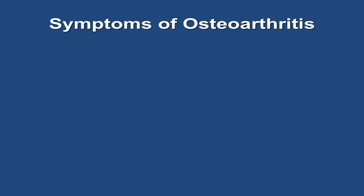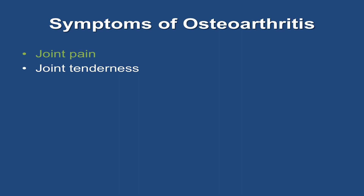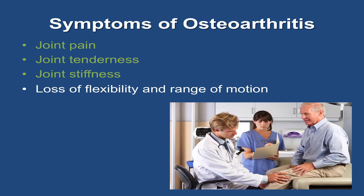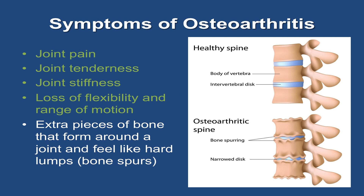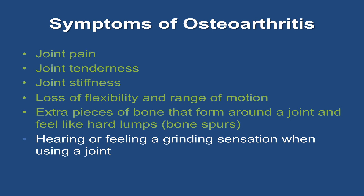Symptoms of osteoarthritis often develop slowly and tend to get worse over time. Signs and symptoms of osteoarthritis include joint pain, joint tenderness, joint stiffness, loss of flexibility and range of motion, extra pieces of bone that form around a joint and feel like hard lumps called bone spurs, and hearing or feeling a grinding sensation when using a joint. Talk to your doctor if you have pain or stiffness in a joint that lasts for more than a few weeks.